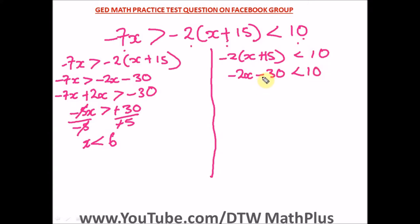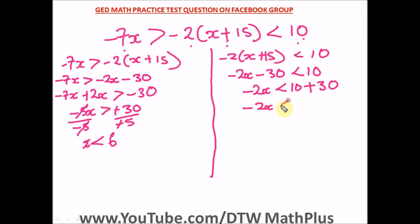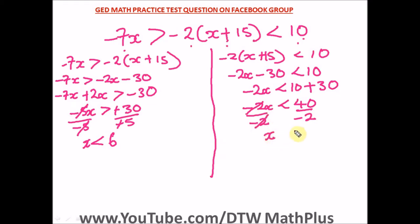Taking like terms to one side — taking negative 30 to the right side, it becomes positive 30. So we have negative 2x less than 10 plus 30, which gives us negative 2x less than 40. To get the value of x we divide both sides by negative 2.